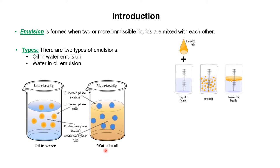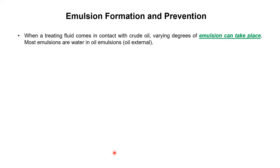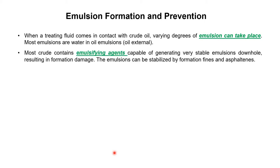When we say water-in-oil emulsion, it means water is present in the oil — water is acting as a dispersed phase and oil is present as a continuous phase. When we talk about the petroleum reservoir, water-in-oil emulsion is actually the problem. Most emulsions encountered are water-in-oil emulsions where oil is present as the external or continuous phase. Most crude contains emulsifying agents that have the capability to generate a stable emulsion downhole, resulting in formation damage or plugging the formation. The emulsion can also be stabilized by formation fines and asphaltenes.